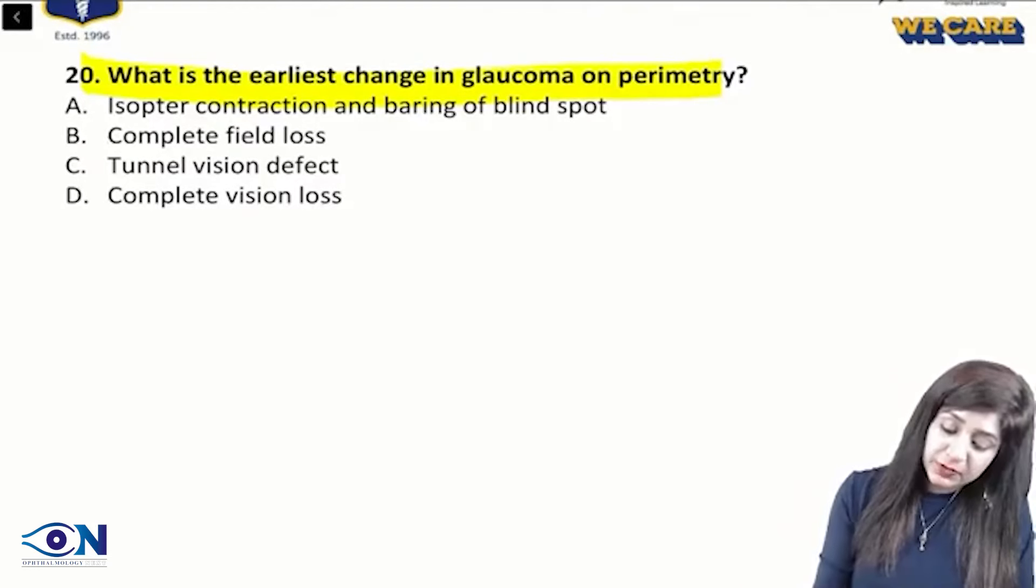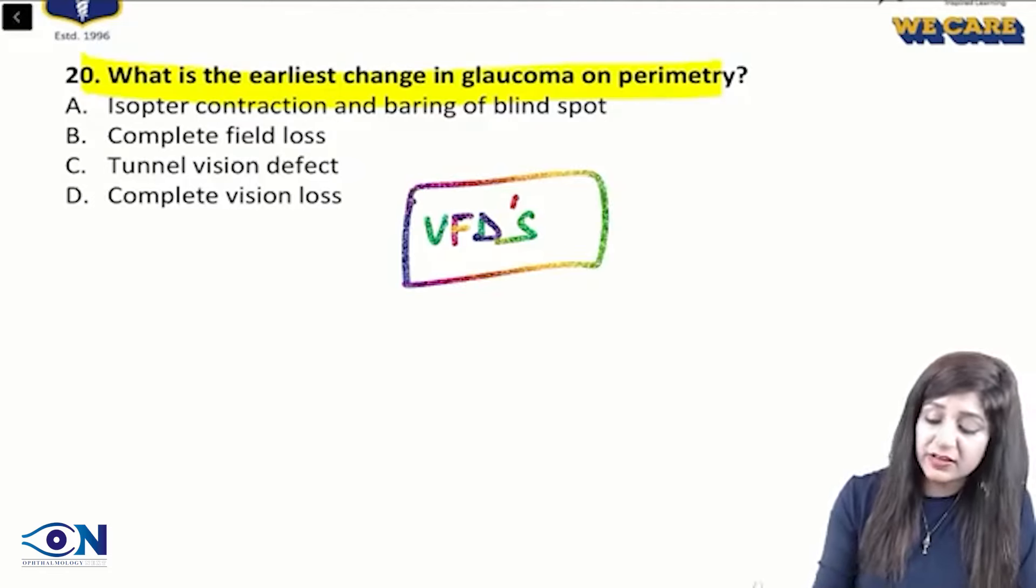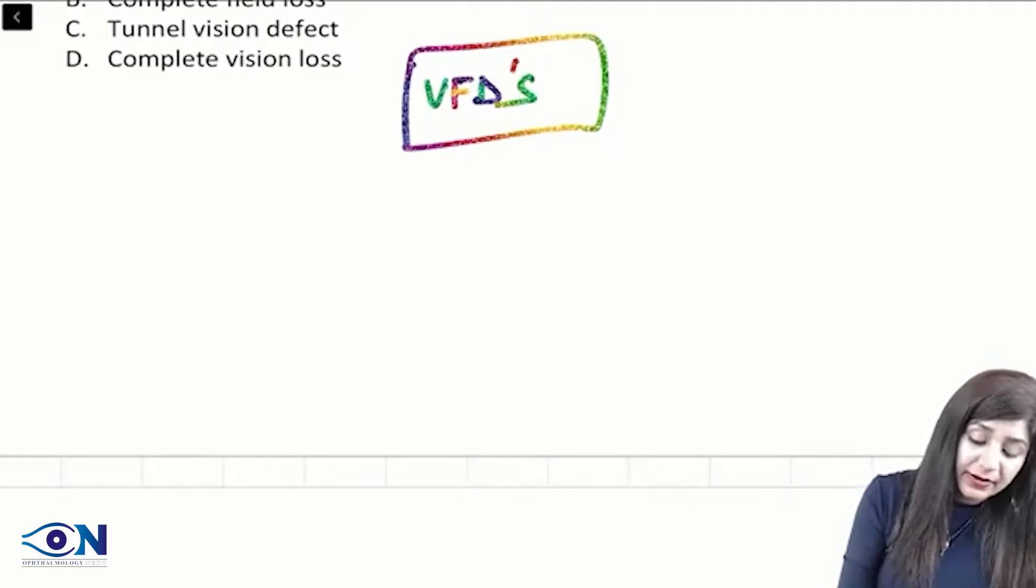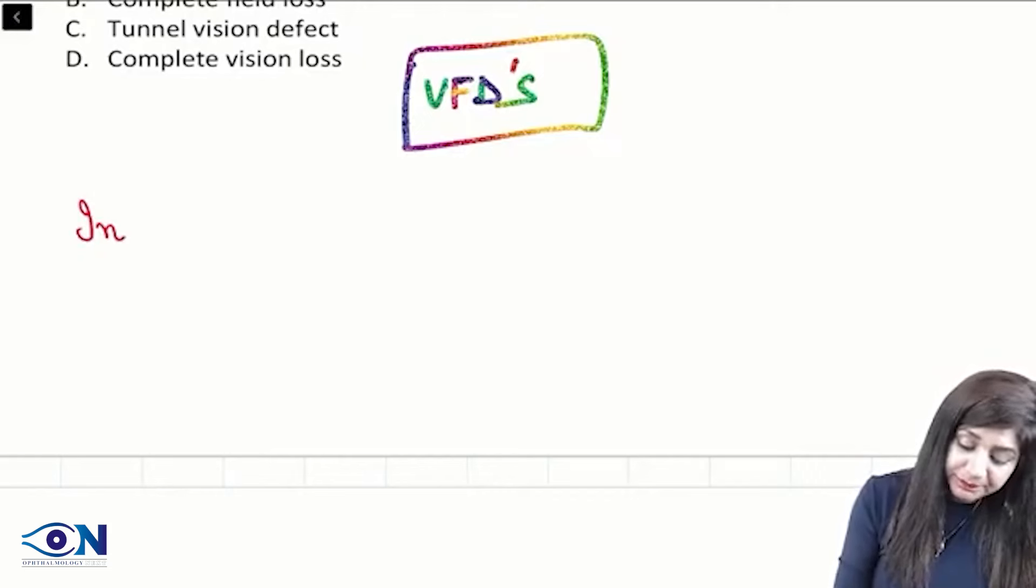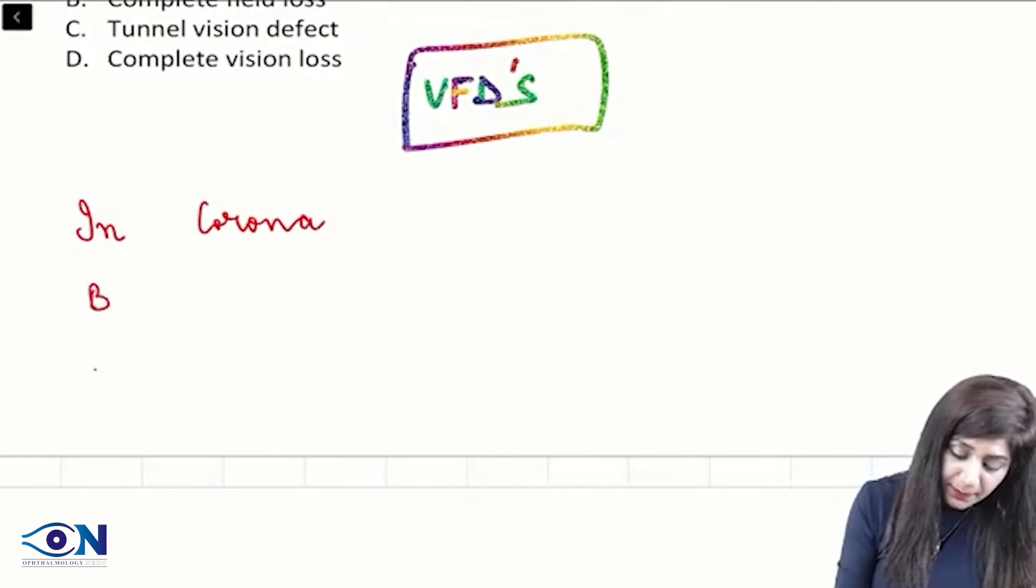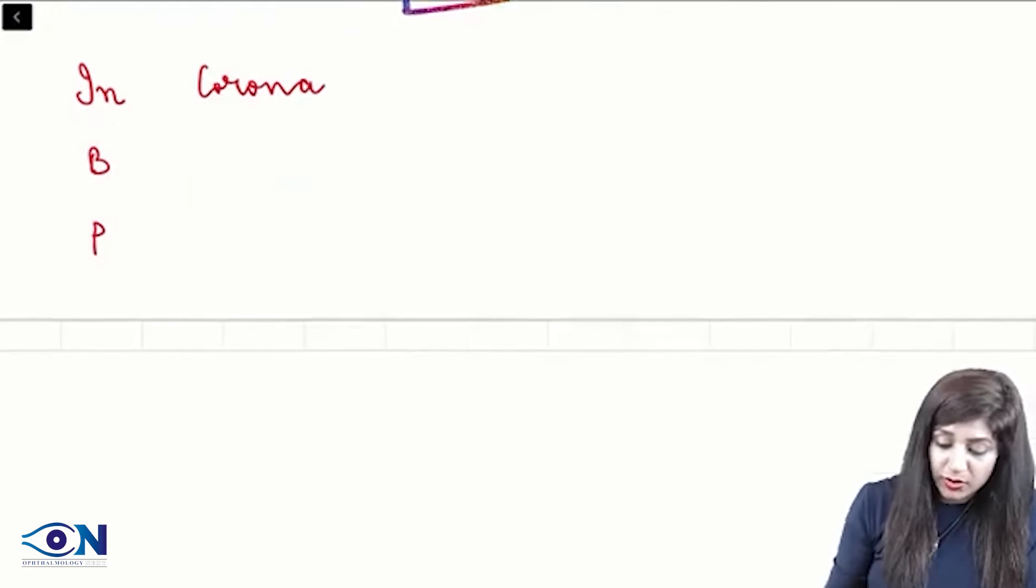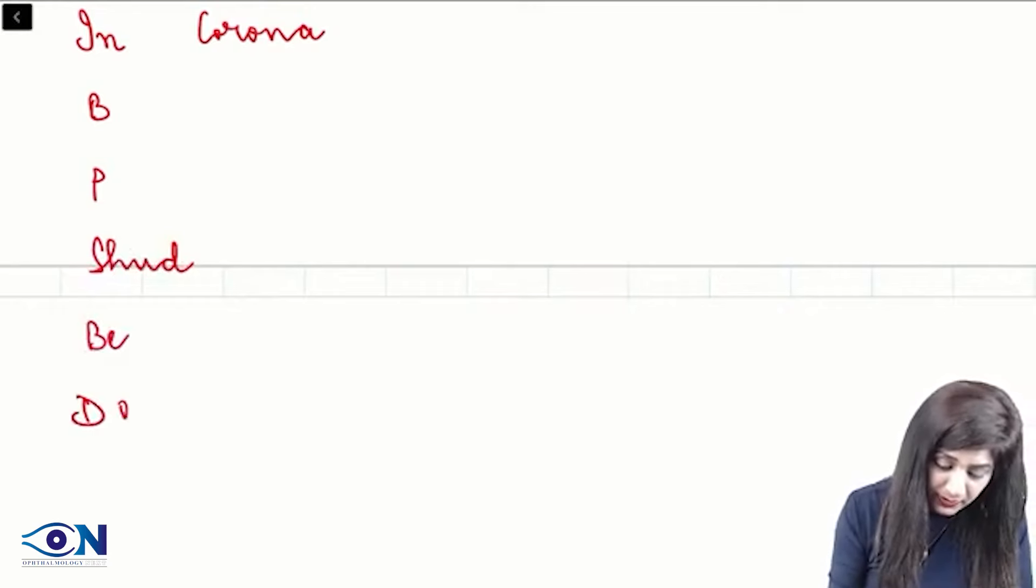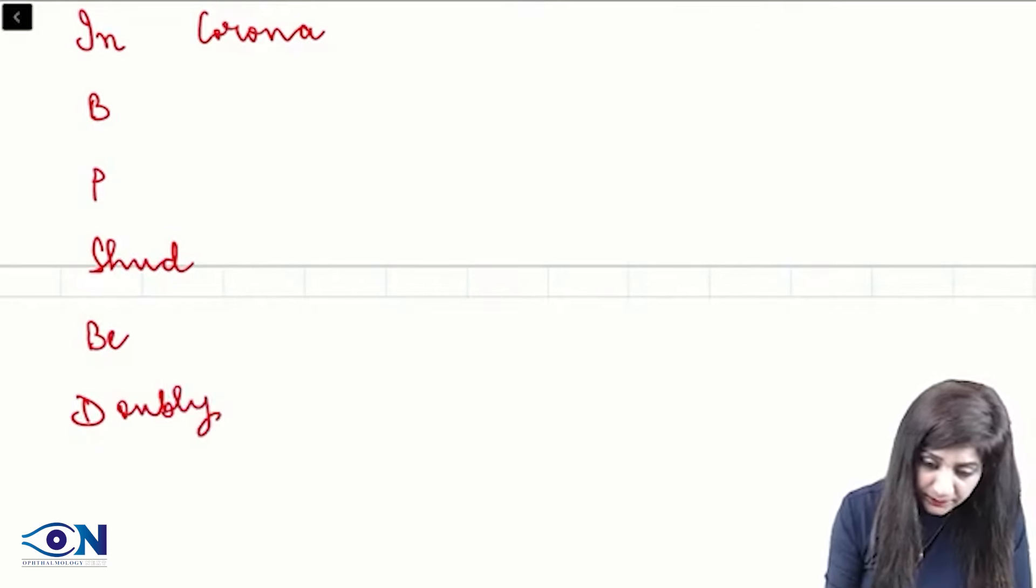So, we have a lot of visual field defects in glaucoma and we have a simple mnemonic to find out all the visual field defects. That is in corona, in corona BP, in corona BP should be doubly tested.